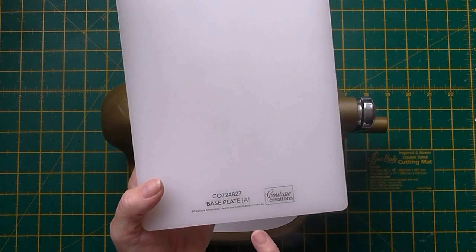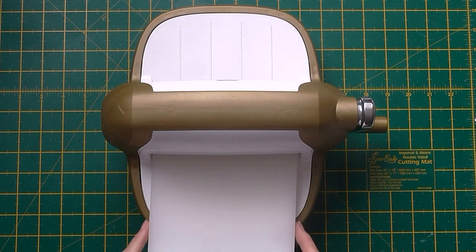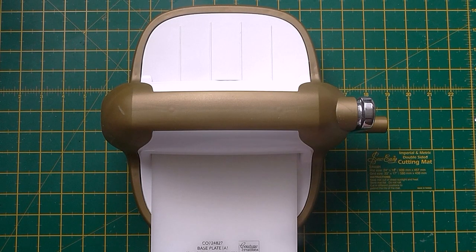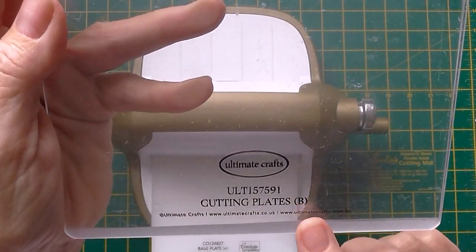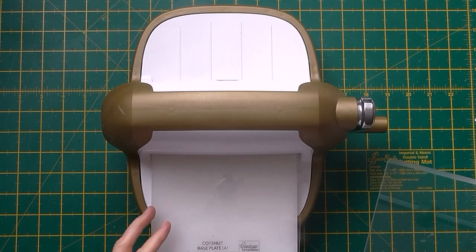So we need the following plates. We need the base plate A and I'm going to pop that down in my machine. We need to have two B plates. These are the B plates so we need two of these. So I'm going to put one of them down